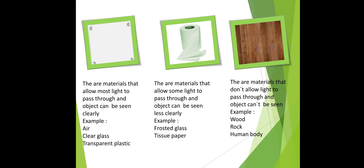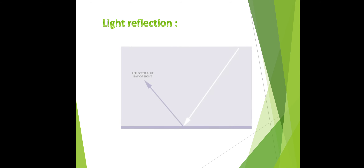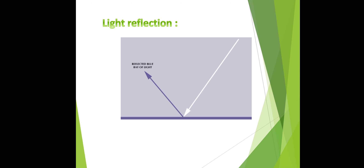Examples of semi-transparent materials include frosted glass and tissue paper. Opaque materials do not allow light to pass through at all and objects cannot be seen. Examples include wood, rock, and the human body.